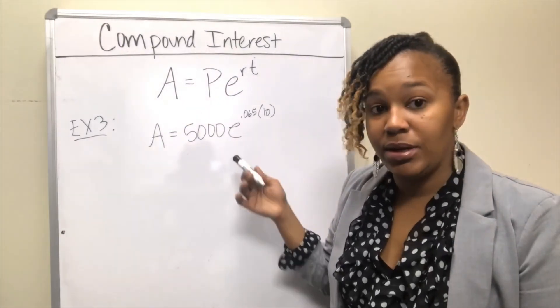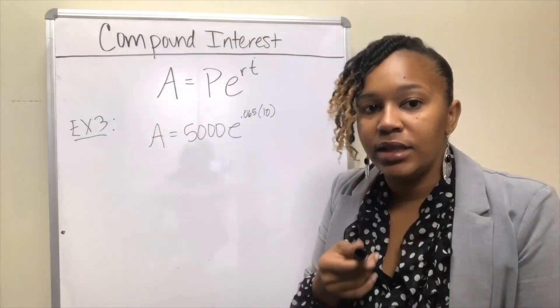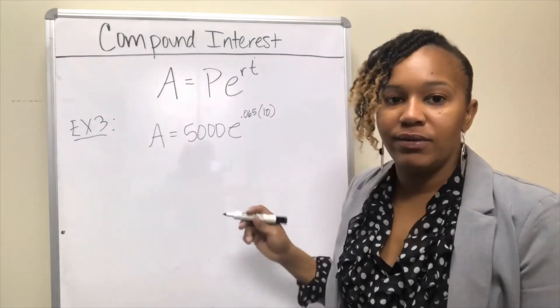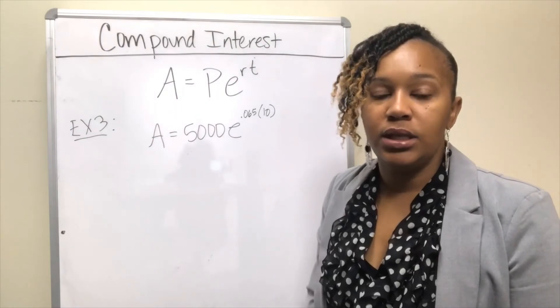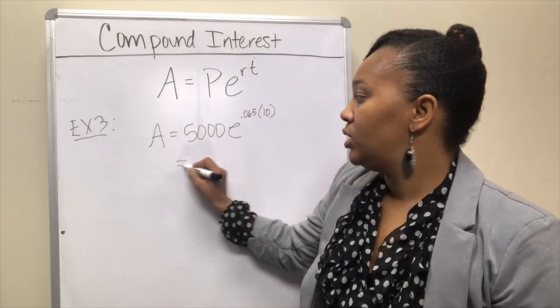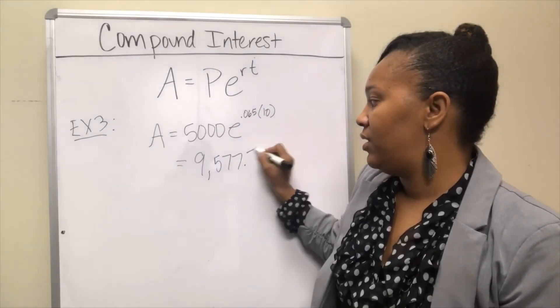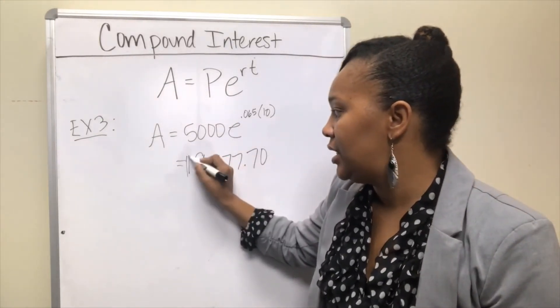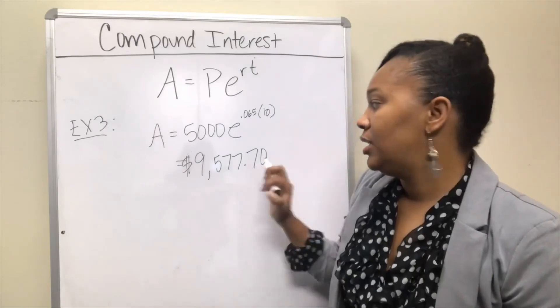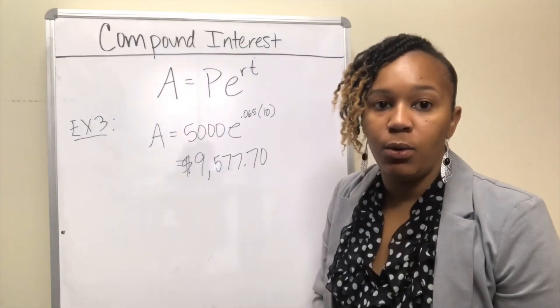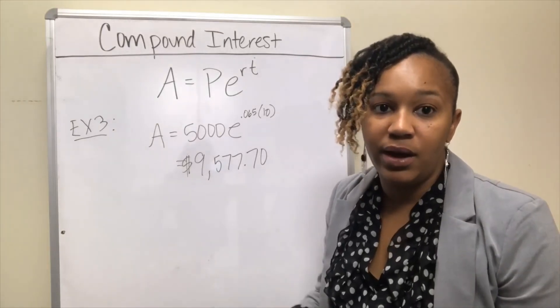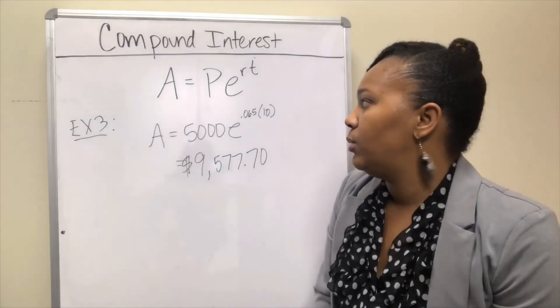Remember there's the e to the x button, so make sure you find that e to the x button on your calculator. Plug in e and in parentheses put 0.065 times 10, close the parentheses, and multiply that by 5,000. You should have got $9,577.70. If you compare this to the last solution which was compounded quarterly, this is even more than what we got when compounded quarterly. So continuous compounding will always give you the greatest value of the different compounding scenarios that we talked about.